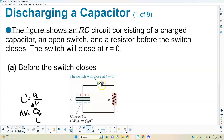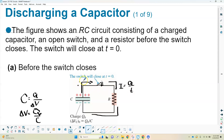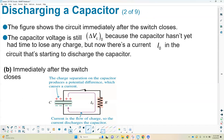Current is just the movement of charges — Q over T. As current flows, the charges move through the wire and through the resistor, powering whatever device is connected. That current is going to change because it's not a consistent flow like a battery — the capacitor has a fixed amount of charge, and as it loses charge, there's less and less current moving. That's why the charge and current are both changing over time.